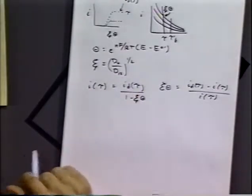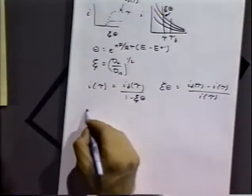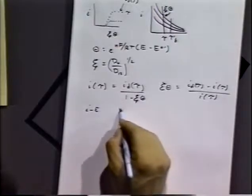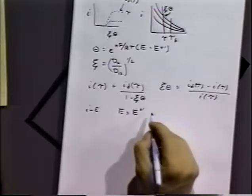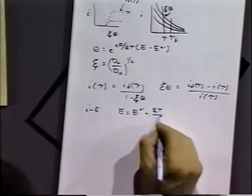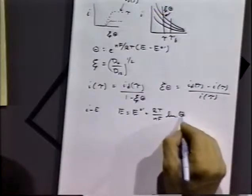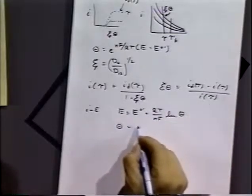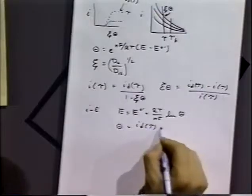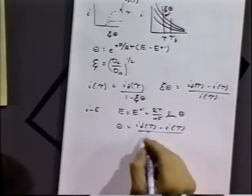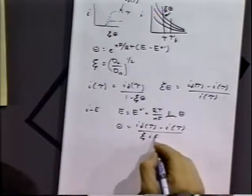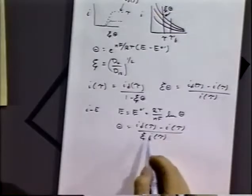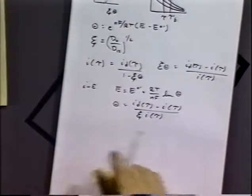For current potential curves, we can take this information and since we know that for a reversible system, theta is equal to what we've already written down, except that we've now added the little squiggly e to this mix. And so often we will assume d O equals d R and then we can drop that little squiggly e out of the system and that gives us what we want to know.